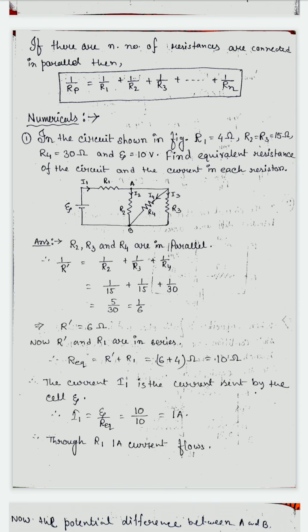So this is all about series and parallel combination. In series combination: I is constant, V is different, and the equivalent resistance is more — that's why the current flowing through the circuit is less. In parallel combination: V is constant, I is different, and the equivalent resistance is low or minimum — that's why current flows through the circuit is maximum. Now let's look at two numericals to revise how to solve series and parallel problems.